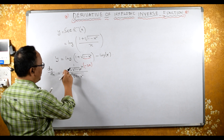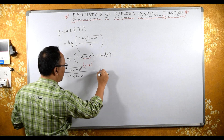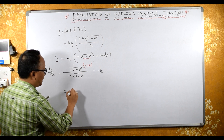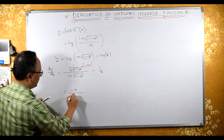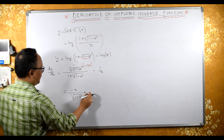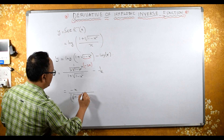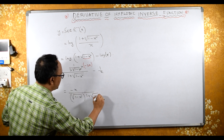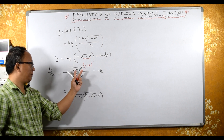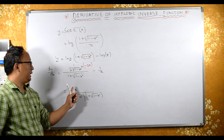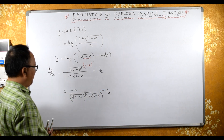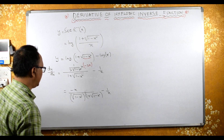Now these terms get cancelled. The derivative of log(x) is 1/x. After cancellations, we have: minus x upon square root of (1 minus x²), all multiplied by 1 over (1 plus square root of 1 minus x²), minus 1/x. Now let's take the LCM.